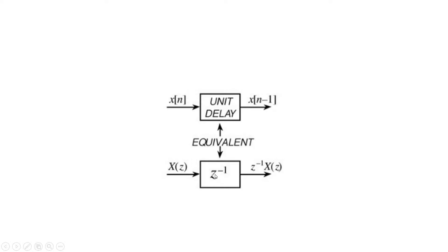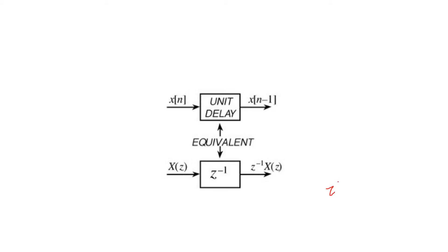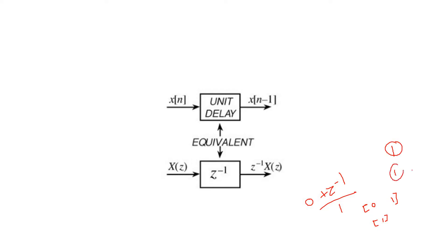Now suppose you want to plot the frequency response in MATLAB — you need the numerator and denominator coefficients. For z⁻¹, arranging the numerator in order: since there is no constant term, we write it as 0 + z⁻¹, so numerator coefficients are [0, 1] and denominator coefficient is [1]. You must write it this way; otherwise MATLAB cannot understand the ordering.